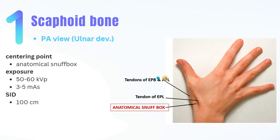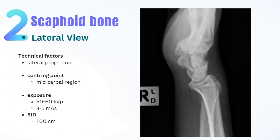The X-ray should be centered at the anatomical snuff box, which is easy to find. The exposure factors are 50 to 60 kilovoltage and 3 to 5 milliampere-seconds. Remember to use a short SID of around 100 centimeters. Now let's move on to the second view, which is the true lateral X-ray.